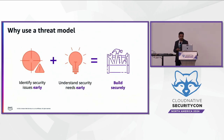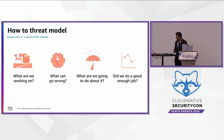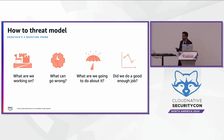Why do we use a threat model? Essentially, we identify security issues within our application — what is our business context, what is our application, what are the security vulnerabilities very specific to our workload? Once we identify those early, we are able to make changes in the design phase so we're not doing any rework later in the software development life cycle.